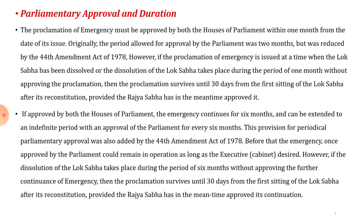If approved by both houses of parliament, the emergency continues for six months and can be extended to an indefinite period with the approval of parliament for every six months. This provision for periodical parliamentary approval was also added by the 44th Amendment. Before that, the emergency once approved by parliament could remain in operation as long as the executive — that is, the cabinet — decided.